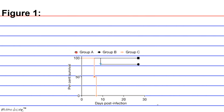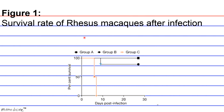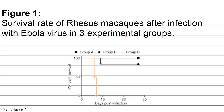Figure 1: Survival rate of rhesus macaques after infection with Ebola virus in three experimental groups. Group A received the ZMAP1 treatment cocktail, Group B received the ZMAP2 treatment cocktail, and Group C received only nonspecific adjuvants — chemicals added to boost the immune response — but no monoclonal antibodies. Group C serves as the control.